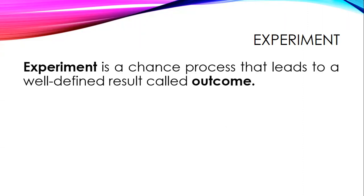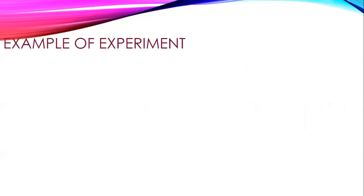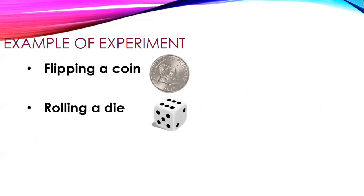Let's start with experiment. This is where the basic concept of probability comes in. Experiment is a chance process that leads to a well-defined result called outcome. Experiment refers to any situational activity that involves chance. It can be in the form of making observations or taking measurement. So experiment is a process or any situational activity that involves chances, and the experiment has a well-defined result which we call outcome. Let's have an example of experiment: first is flipping a coin, next is rolling a die.